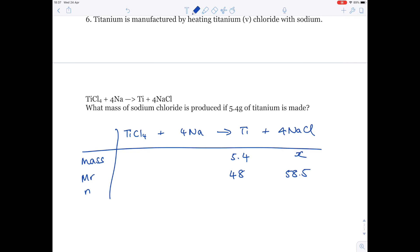To work out the number of moles of titanium, do mass divided by MR, so 5.4 divided by 48, which is 0.1125. Now, double-check these big numbers. You want to look at what's called the mole connection.